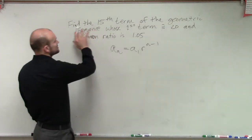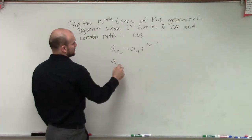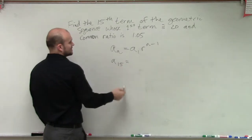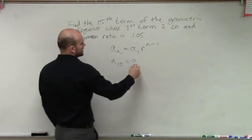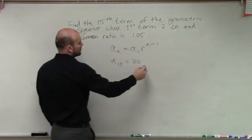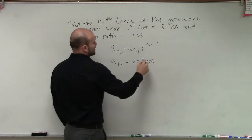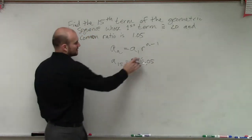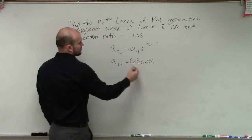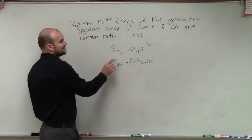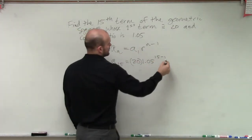And we are trying to figure out the 15th term. So that's going to be a sub 1, which is 20, times r, which is 1.05. Make sure we put this in parentheses. Let's put the 20 in parentheses. 1.05 times 15 minus 1.